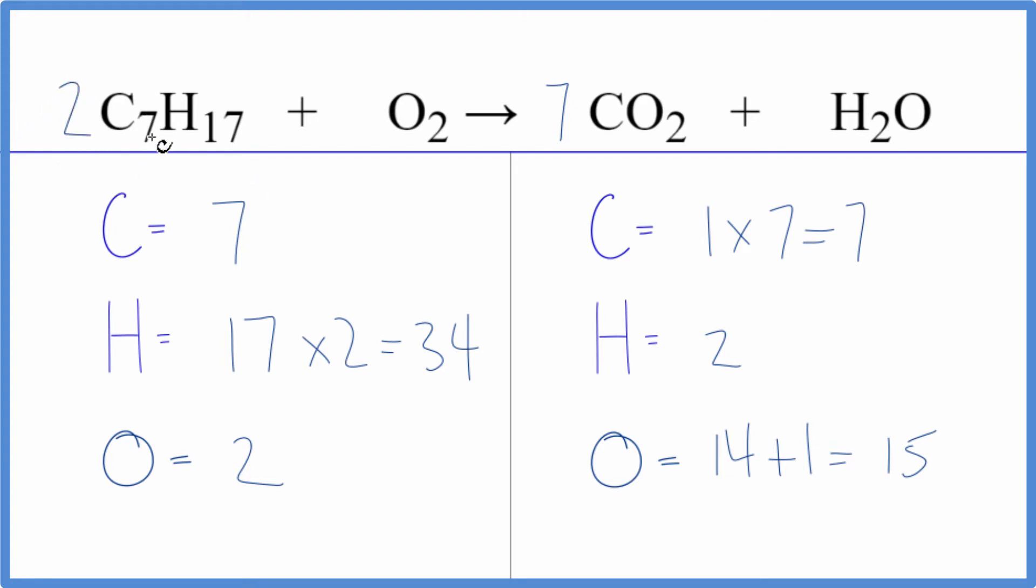Now I have seven times two, that'll give me 14. And then I have the 17 here times the two, that gives me the 34. Now over here, I'll put a 17 in front of the water here, the H2O. And two times 17, that'll give me 34.